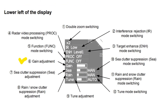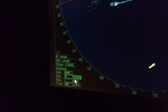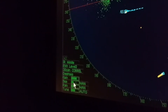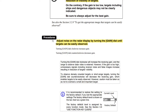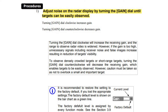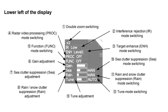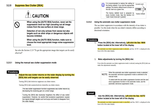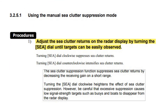Adjust the radar display by turning the V-GAIN dial. If the gain is too high, unnecessary signals including receiver noise and false images increase, resulting in reduced visibility of targets. If the gain is too low, targets including ships and dangerous objects may not be clearly indicated. Sea clutter suppression (SEA) adjustment: this function suppresses sea clutter returns by decreasing the receiving gain at short range. Turning the SEA dial clockwise heightens suppression, but be careful that excessive suppression causes low signal strength targets such as buoys and small boats to disappear from the radar display.